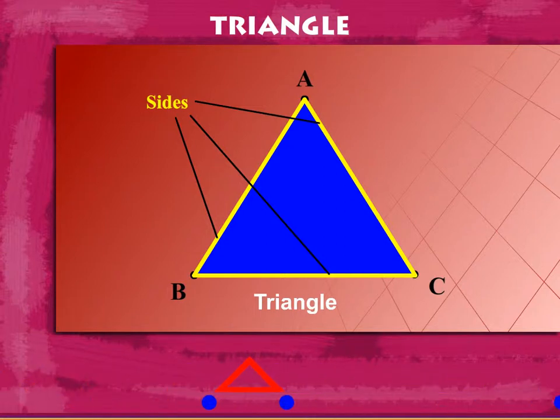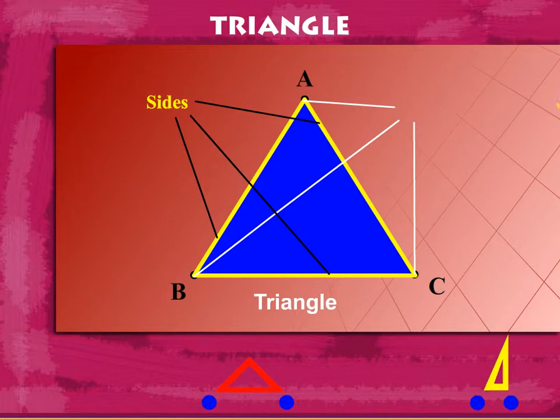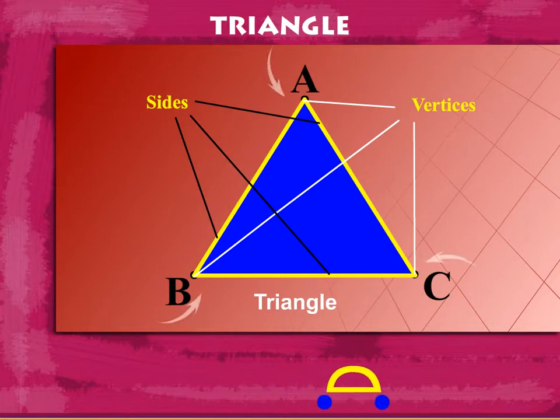The points of a triangle A, B, and C are called vertices of triangle ABC. The triangle has three angles at its vertices made by two successive sides.